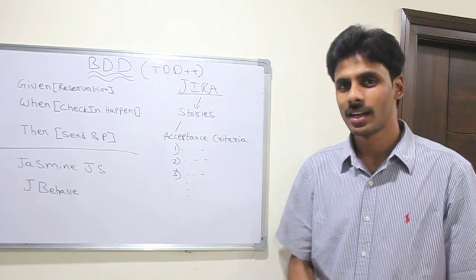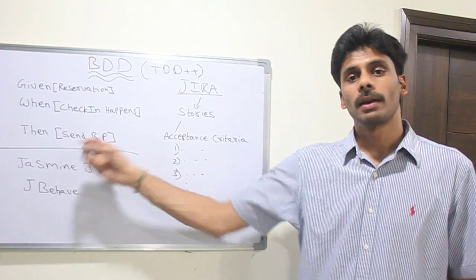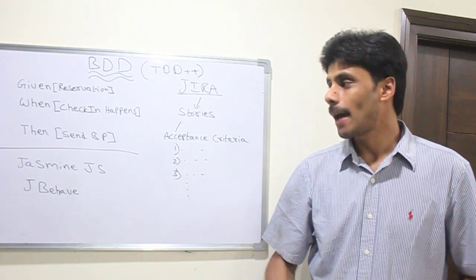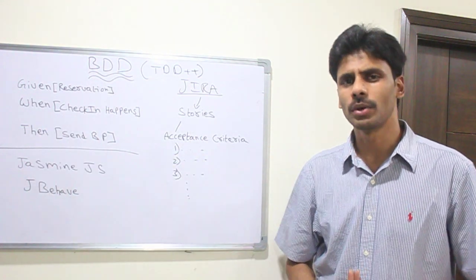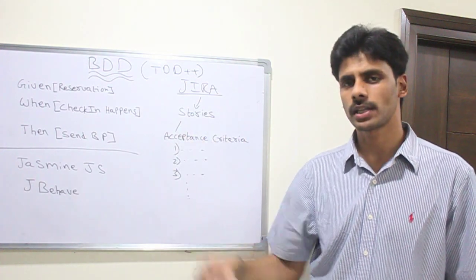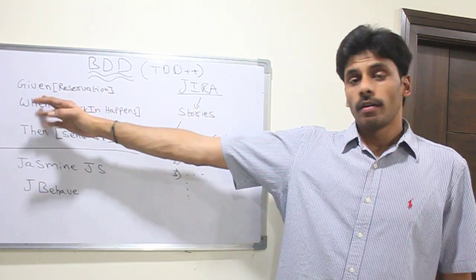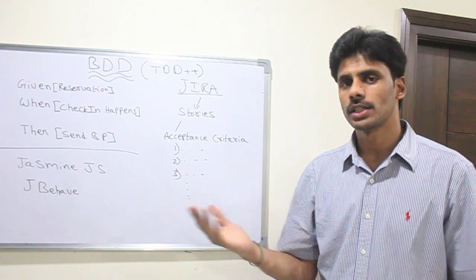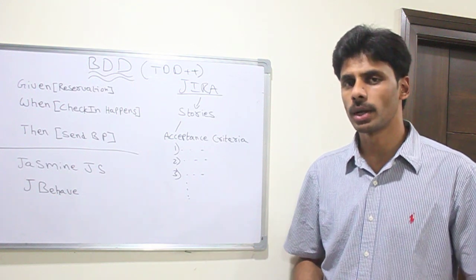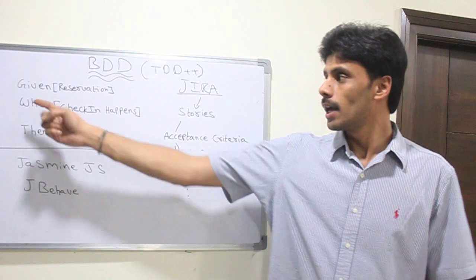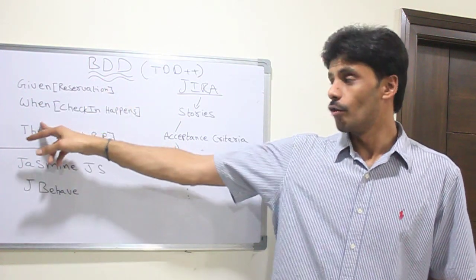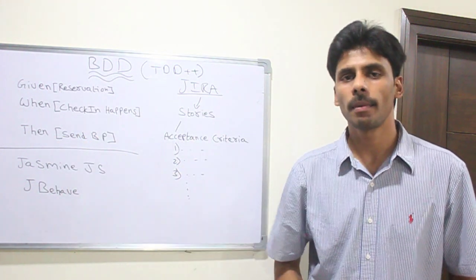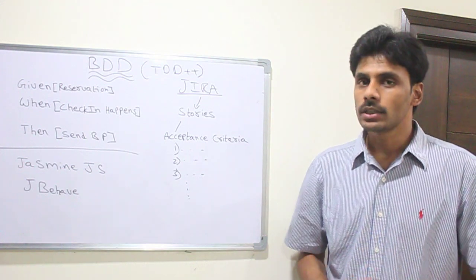Here are three words in which BDD can be expressed: given, when, then. Given a scenario, when something happens, what should happen. Very similar to how we write unit tests but again it directly links to the acceptance criteria. For example, if we are working on an airline check-in system wherein a user can come into our website and do an online check-in, print his boarding pass or email his boarding pass. One simple scenario will be: given a passenger reservation, when a check-in happens, then a boarding pass should be sent. Similarly you can come up with several different BDDs or test cases for your application.